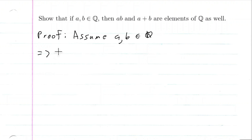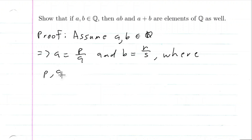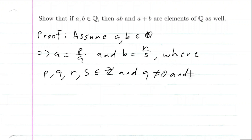This implies that A is equal to P over Q, and B is equal to R over S, where P, Q, R, S are all integers, and Q is not equal to zero, and S is not equal to zero. This is the definition of a rational number. Since we know A and B are rational numbers, we know it's an integer over an integer, where the integer in the denominator is not zero.